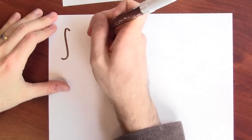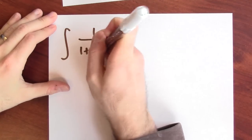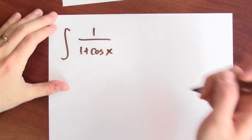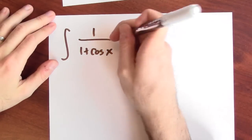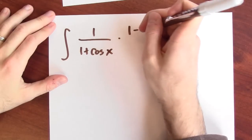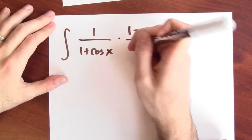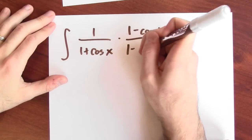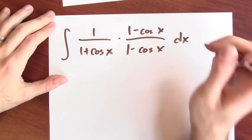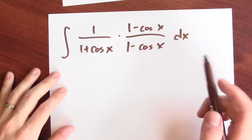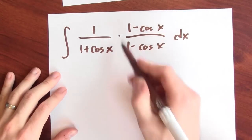Instead of doing that, let's try a different trick. Let's try to multiply 1 over 1 plus cosine x by (1 minus cosine x) divided by (1 minus cosine x). This doesn't change the integrand at all, because this is just 1. This trick makes a hitherto invisible substitution visible.